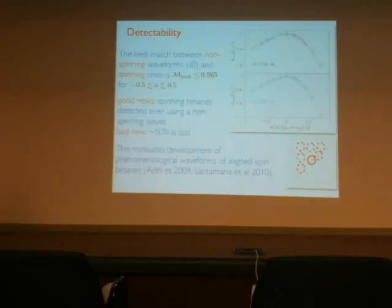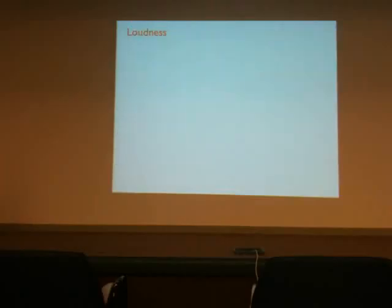Which is good, because it is exactly the template that we are using nowadays. So nowadays we can detect spinning binaries even with non-spinning templates. But there is also bad news that 50% of the signal is lost. And that's why it's very important that things like phenomenological waveforms of aligned-spin binaries are actually implemented in the search line.